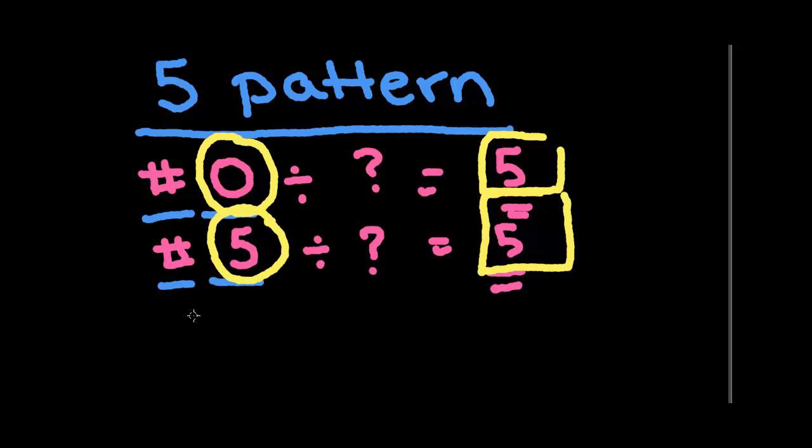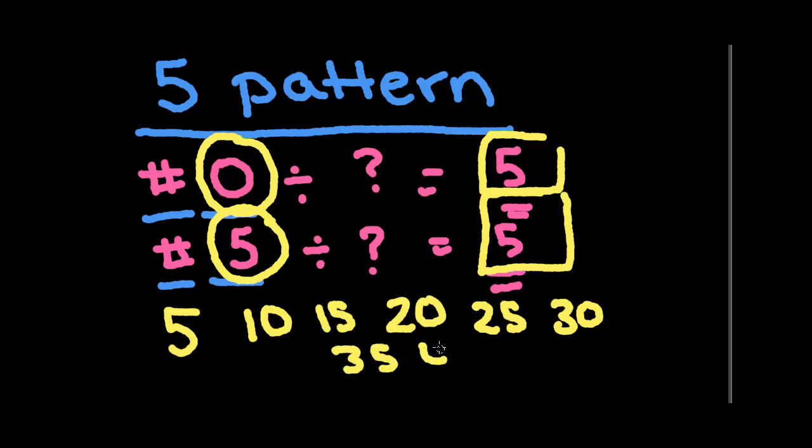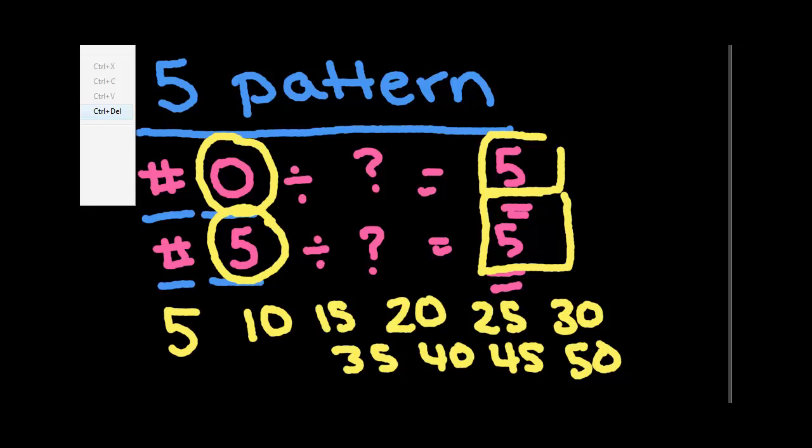That's going to clue you in that 5 very well could be the answer to the problem. Just like when we looked for the 9 pattern, when we looked, did these two digits add to be 9. If the two digits there and one of them ends in a 0 or a 5, we're going to look to see if the answer is 5. If you think about it, when you count by 5, you count 5, 10, 15, 20, 25, 30, 35, 40, 45, 50. All those numbers end in either a 0 or a 5. So anytime you're in that 5 family, you're going to be with a number that either ends in a 5 or a 0.